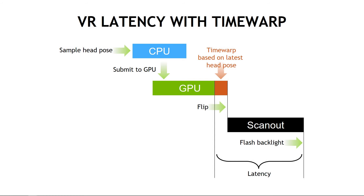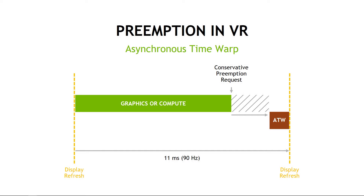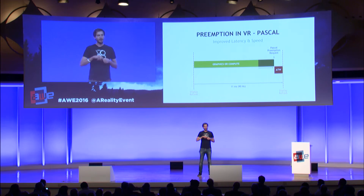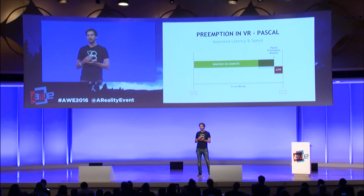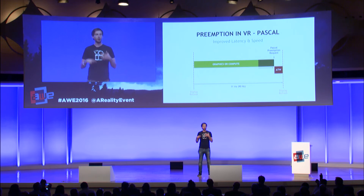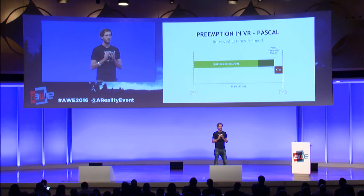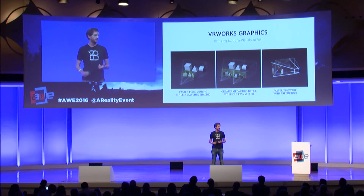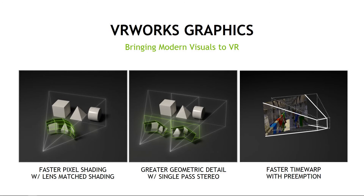This was already implemented. What we've done with our Pascal architecture is a system called preemption. Usually you have a pretty conservative preemption request — you have to account for the time needed to interrupt the GPU. With Pascal, you can interrupt the GPU at a very fine granularity; you don't have to wait for the last draw call to finish. You can save a bit of additional time on top of asynchronous time warp by looking closer to the actual scan-out of the display. So I've covered three things: less pressure on the pixel shader, greater geometry detail with single-pass stereo, and faster time warp with preemption.